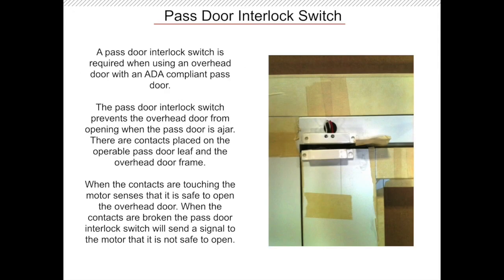The pass door interlock switch stops the overhead door from opening when the pass door is ajar. This is a very important feature and should always be used when installing an overhead door with an ADA pass door — not including this can cause serious injury and property damage. Electrical contacts are connected to the operable part of the pass door and the overhead door frame. When the contacts are touching, the motor senses it is safe to open. Once the contacts are broken, the interlock switch sends a signal to the operator to lock into place.